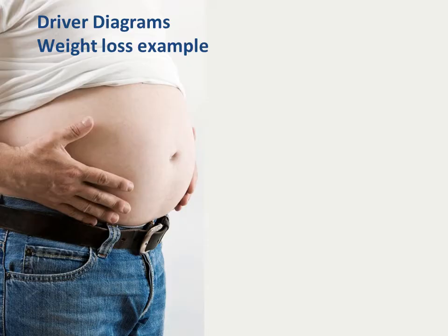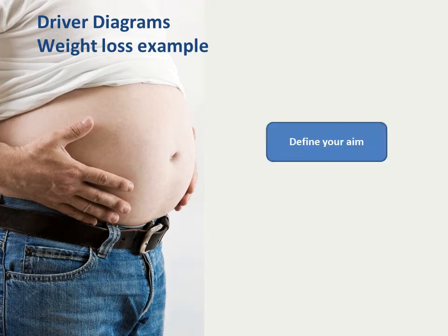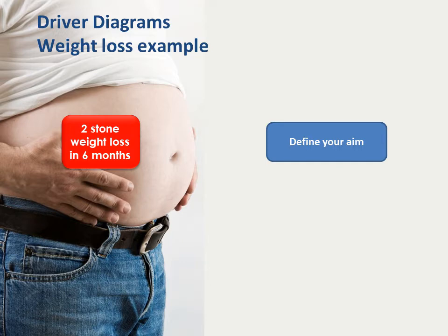We'll start things off by introducing an example to illustrate the process of developing a driver diagram. So we'd like to help this gentleman to lose weight. The first thing to do is to define our aim. It's not enough just to say 'I will become healthier by losing weight.' An aim needs to be a clearly articulated goal or objective of the work you're undertaking, describing the desired outcome. The aim needs to be specific, measurable, time-bound, and most importantly should answer: what is it we're trying to accomplish and how much improvement do we want to achieve?